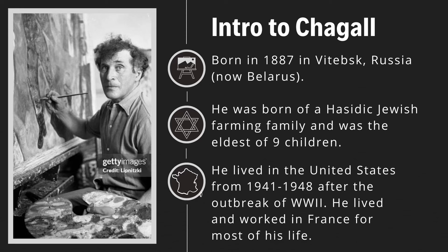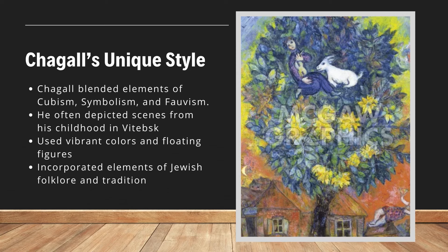Think about how his constant moving around might also impact his artwork. His unique style blended elements of cubism, symbolism, and fauvism, and he often depicted scenes from his childhood in the hometown that he grew up in. In his work, you can see insights into his life on a farm and how that played a major role in his life.